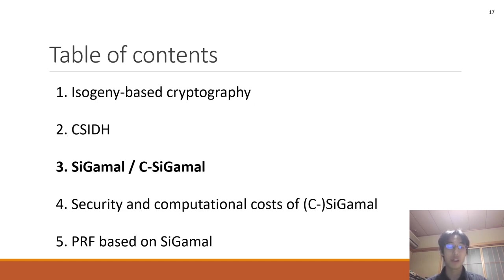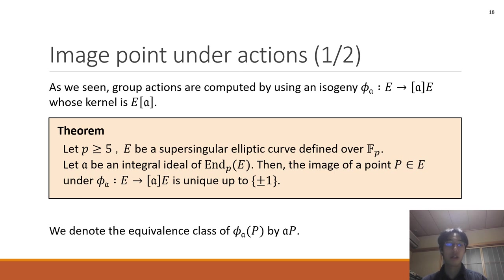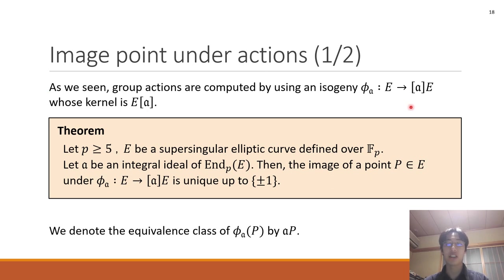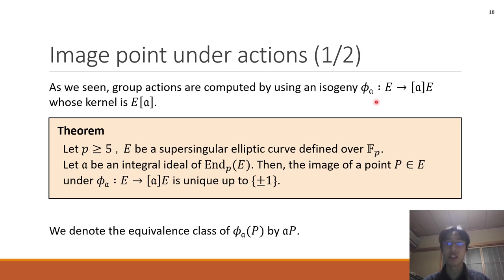Next, we explain the construction of C-GAMMA and CC-GAMMA. First, I explain the image points under group actions. As we've seen, group actions are computed by using an isogeny φ_R whose kernel is E_R. So we can consider the image points under this isogeny.